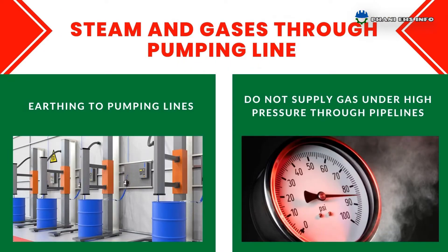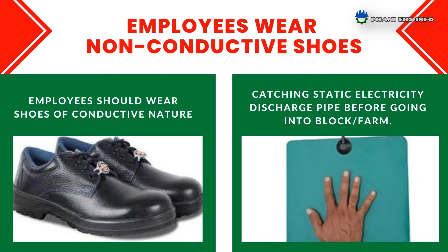For steam and gases through pumping lines, provide earthing to pumping lines and do not supply gas under high pressure through pipelines. Employees should wear shoes of conductive nature and use a static electricity discharge pipe before going into the block.